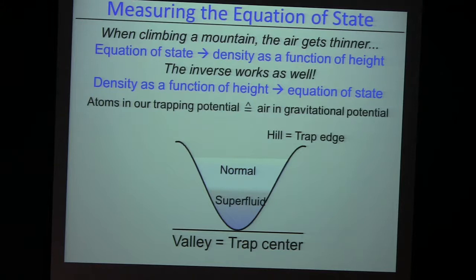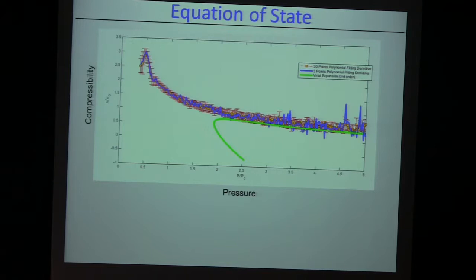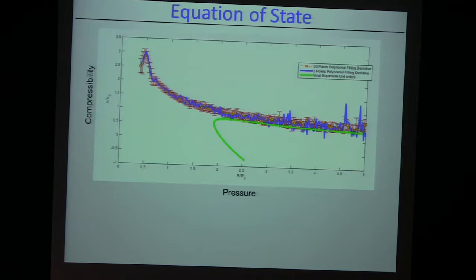Now this can be used to measure the equation of state. Just saying: I use the fact that the density is tuned through the potential. I can extract locally the local compressibility, the local pressure, the local density — just like some climber climbing up a hill to measure how density gets thinner as a function of height. We get the equation of state by measuring the density as a function of potential in our trap. This new tool gives us an equation of state in really just a couple of shots.